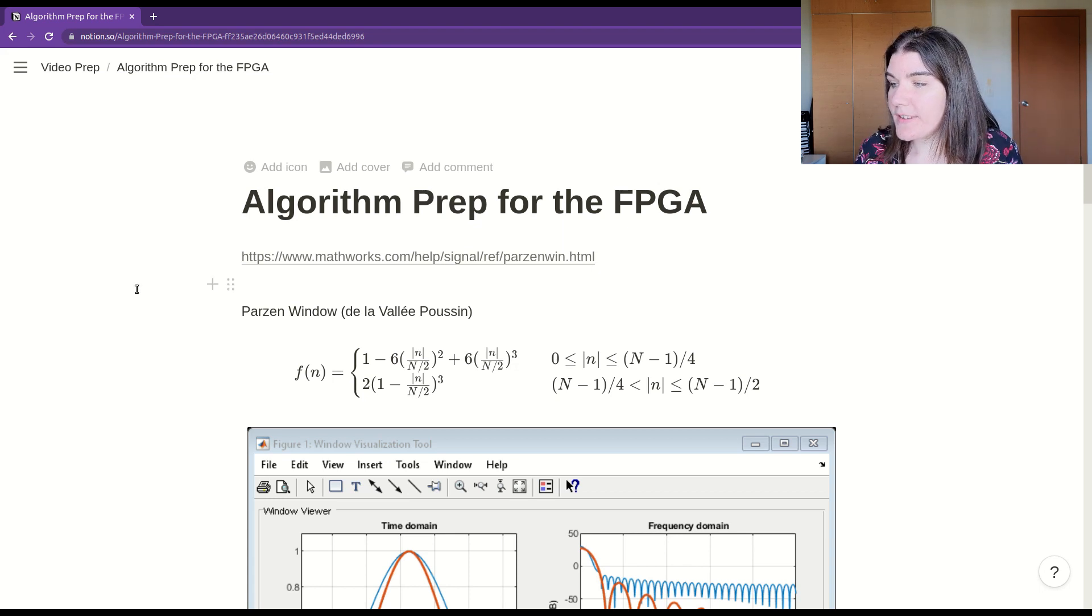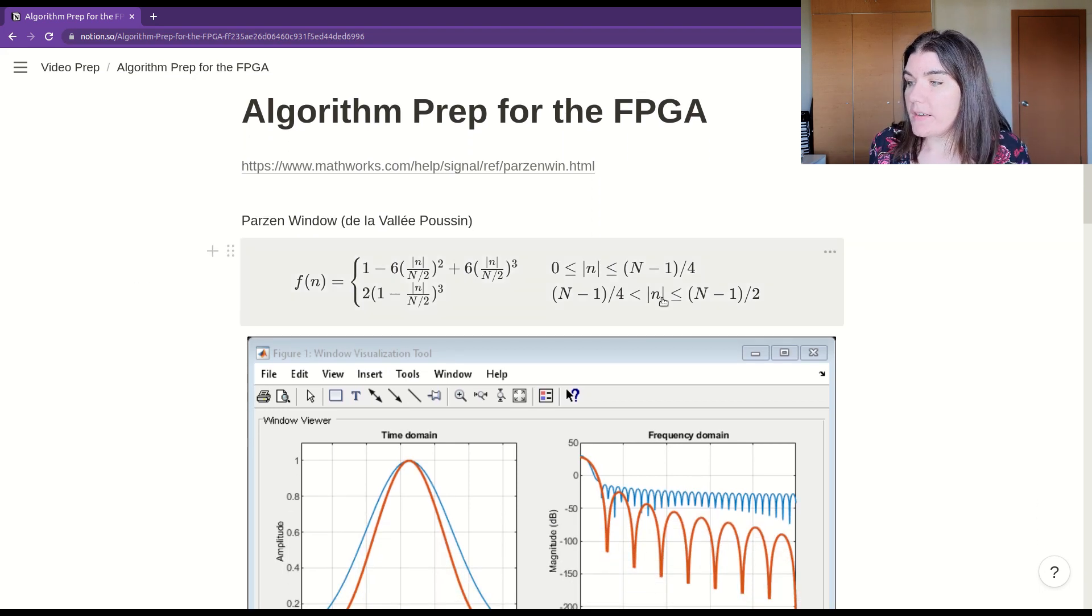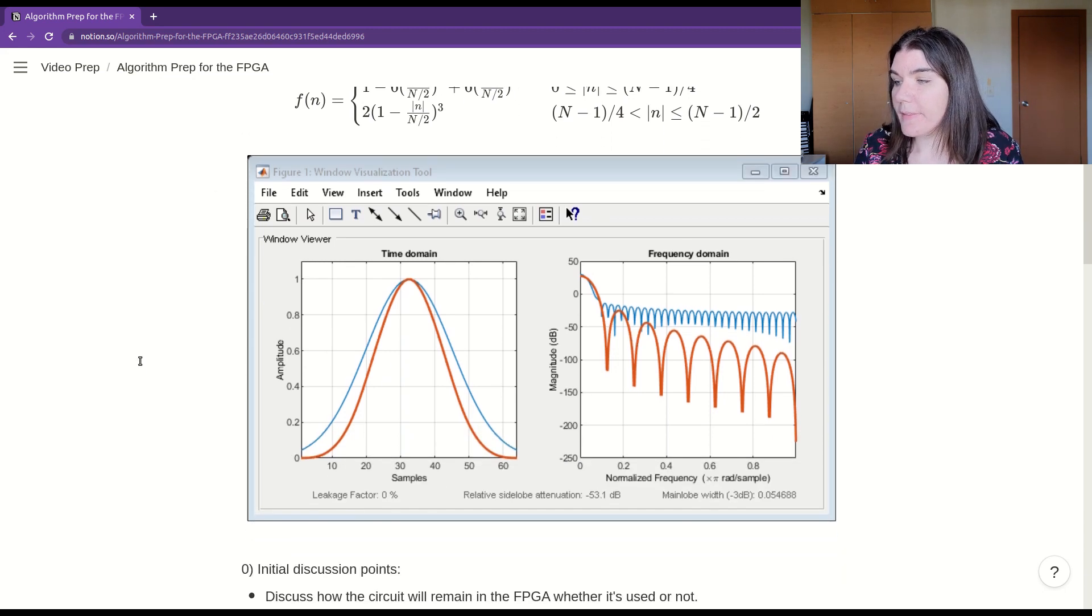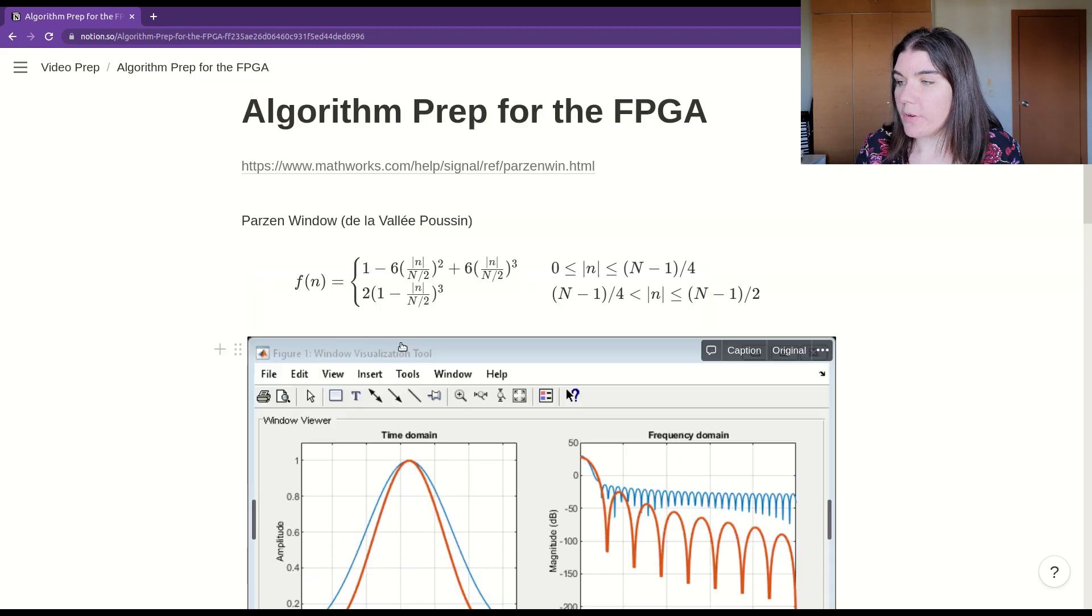I've got it here, this is the formula for it. And it looks pretty nasty, but there are some things that actually aren't so bad about this. It's not as bad as it looks. And this is what the window looks like in the time domain and the frequency domain. I think the blue line is the Gaussian window, and the red line, or the orange thicker line, is the Parzen window.